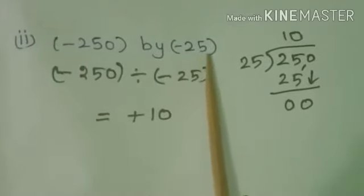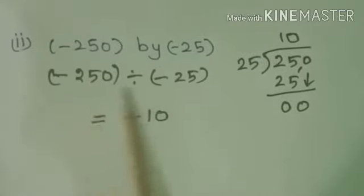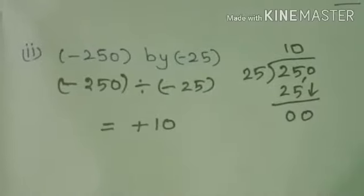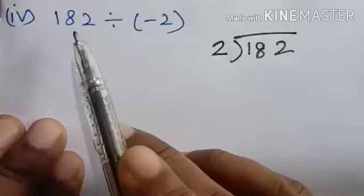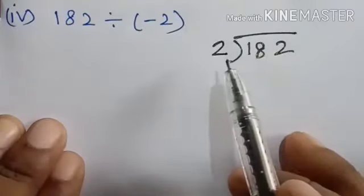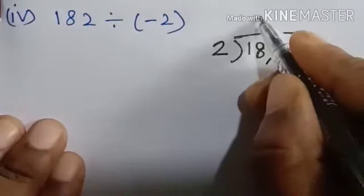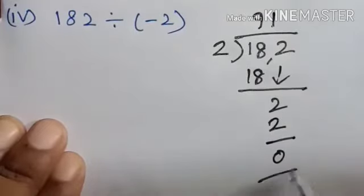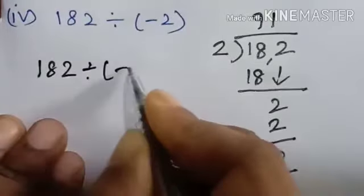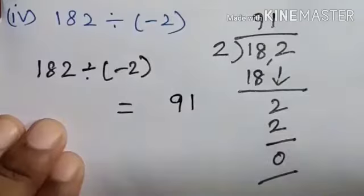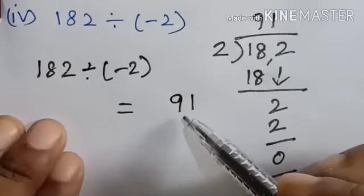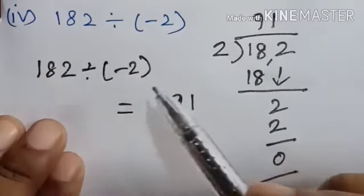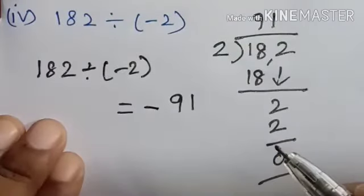Minus 250 divided by minus 25: since the division of two negative integers always gives a positive integer, the answer is plus 10. Similarly, 182 divided by minus 2: we divide 182 by 2 to get 91. Since the division of two integers of different sign gives a negative integer, the answer is minus 91.